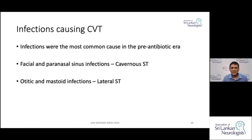Infections causing CVT were most common in the pre-antibiotic era. Infections on the face and paranasal sinuses can cause cavernous sinus thrombosis, and ear and mastoid infections can cause lateral sinus thrombosis. These are less common now with the availability of antibiotics.